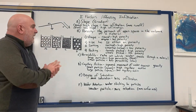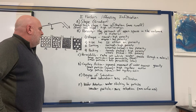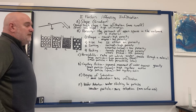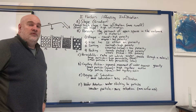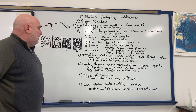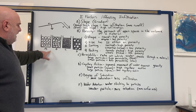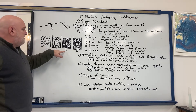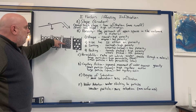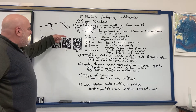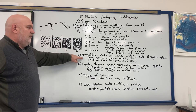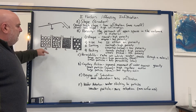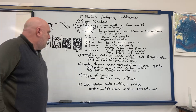Permeability is the rate at which water passes through material. If you pour water on large particles versus small particles, the water travels at different speeds. With large particles, water shoots through quickly. With small particles, water moves through at a slower rate. So big particles have high permeability; small particles have low permeability.